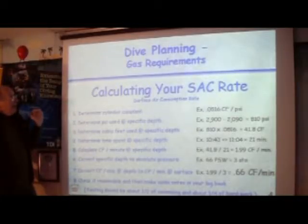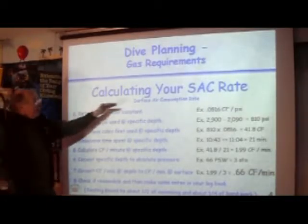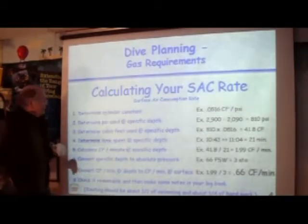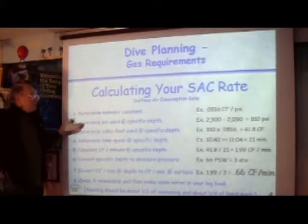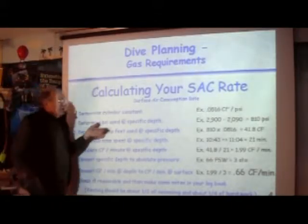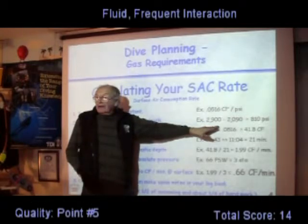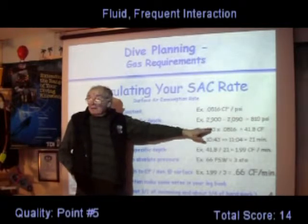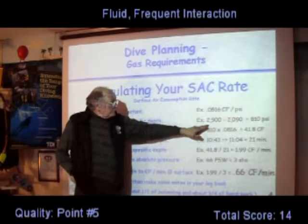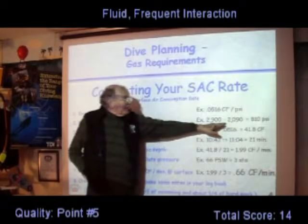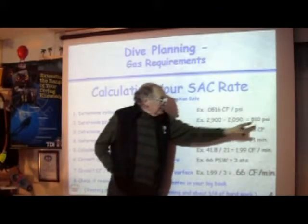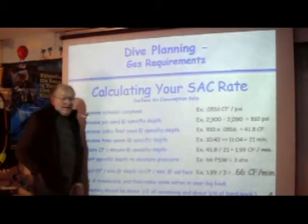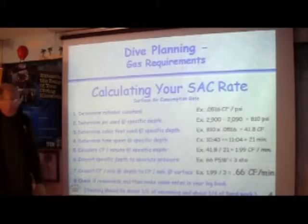You should really invest in your own cylinders and paint the cylinder constant on them for easy reference. I have my own cylinders and every one of them has its respective number painted on it. Now, let's figure out the surface air consumption rate. We determine the PSI used at the specific depth — we started at 2,900 PSI, Maria, and ended up with 2,090 PSI, having used about 810 PSI.